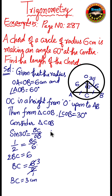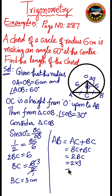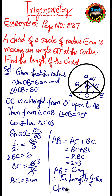The answer is not over — we want AB. Since C is the midpoint, AB equals AC plus BC. And since AC equals BC, AB equals 2 × BC equals 2 × 3 equals 6 centimeters. Therefore the length of the chord is equal to 6 centimeters.